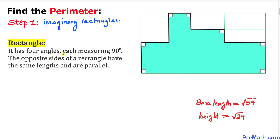A rectangle has four angles each measuring 90 degrees, and the opposite sides have the same length and are parallel. Since all angles in this rectangle are 90 degrees, this side length equals this side length, this side length equals this side length, and likewise for the remaining pairs of opposite sides.